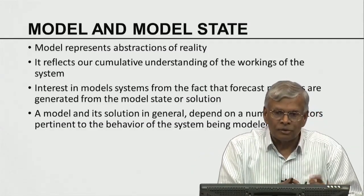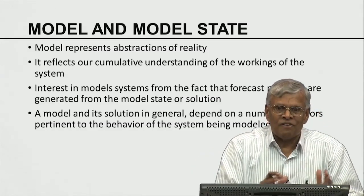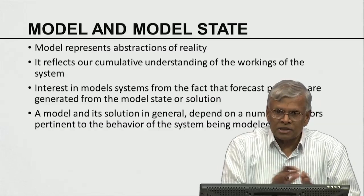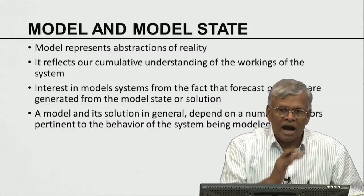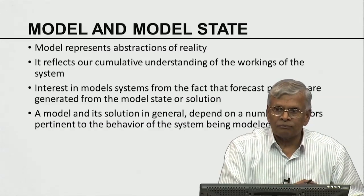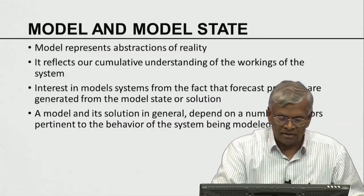Here comes the two facets. The reality as it is, our sensing of reality in terms of observation, and models representing our understanding of how reality probably works — there is probably a gap between the two. It is this gap between the actual reality and our understanding of how reality works that leads to forecast errors. If the model is perfect, the forecasts are perfect. If there is a gap between the model and reality, that gap reflects in the form of forecast errors.